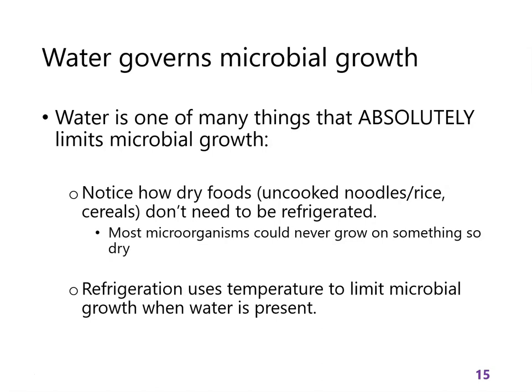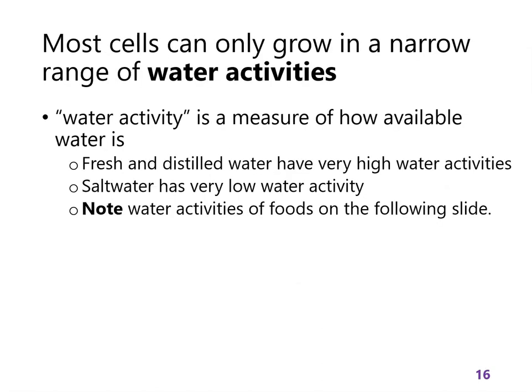Let's start with water. Water is absolutely important for growth. In a kitchen, dry food is stable — uncooked rice generally won't get moldy. But something wet, like a bowl of soup or juice, has to go in a refrigerator where we use low temperature to limit microbial growth. In a refrigerator, we're preventing growth of organisms that grow at our body temperature. Most cells need a very narrow water activity, which is a measure of water availability — like the water concentration, so to speak.